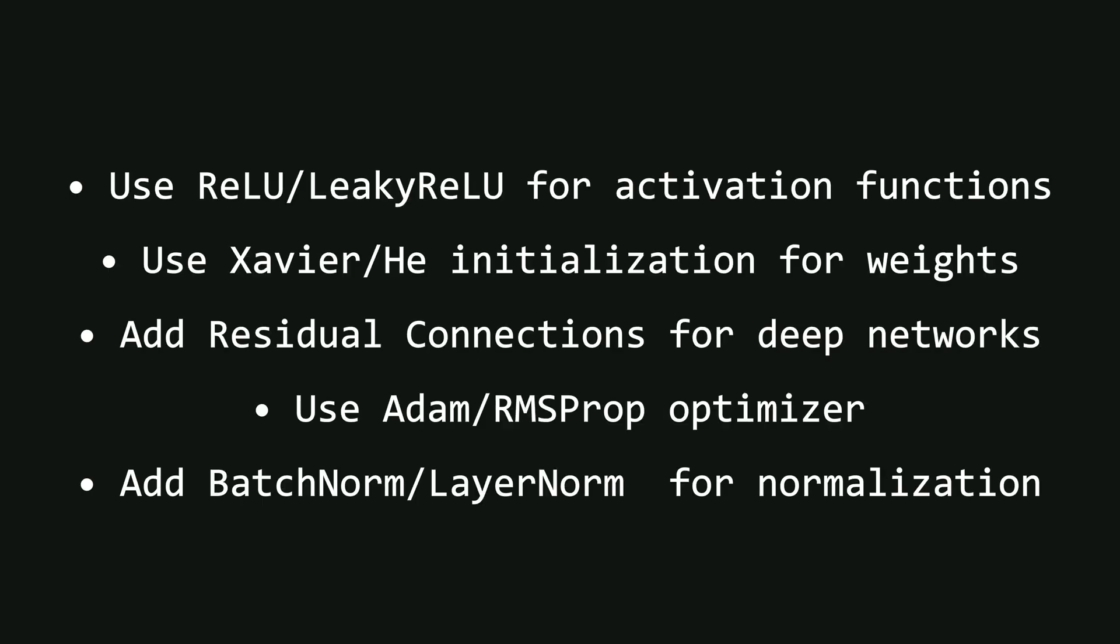Now, there are several methods that help deal with this problem, even if they don't completely fix it. For example, you can use relu type activation functions, which help prevent vanishing gradients. You can also use proper weight initialization techniques, which we will discuss in detail in the next video. Other methods include adding residual connections in deep neural networks, or using optimizers like RMSProp or ADAM to handle learning rate issues, and applying proper normalization techniques to stabilize activations. I will be uploading detailed videos on each of these topics immediately after this one, so stay connected.